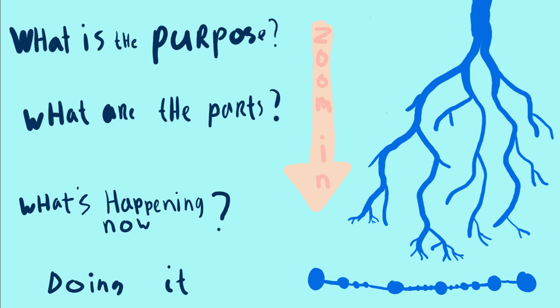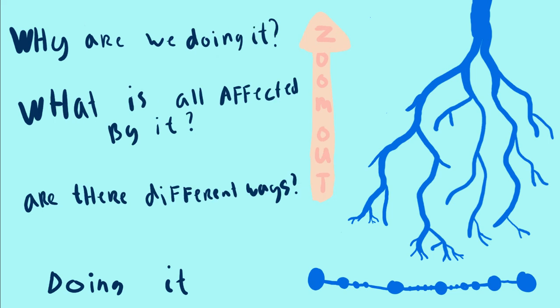So when you start to think like this, you can also ask questions about it to change your scale perception. A few of these questions are: when you zoom into the tree, you might ask what's the purpose of this? What are the parts that are making it? What is happening right now to the end of actually doing it at this very moment? You can really zoom into an issue and you can also zoom out to an issue. What is all affected by doing this and why are we doing it? So you can zoom in and zoom out and ask different questions in certain situations.